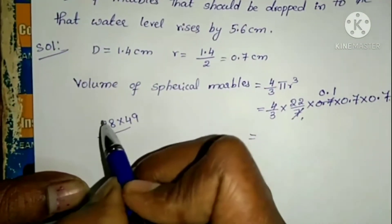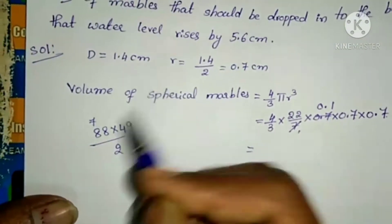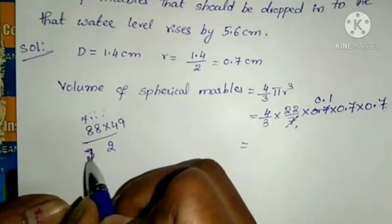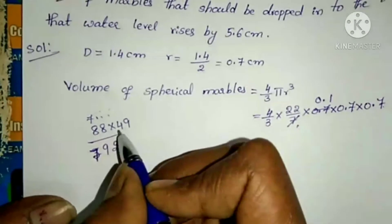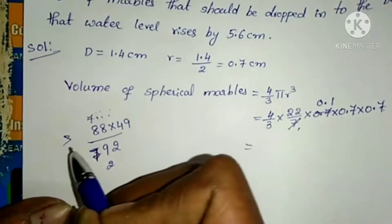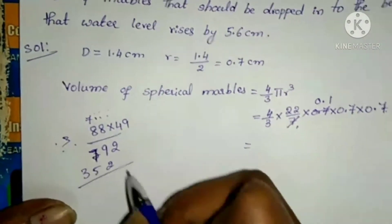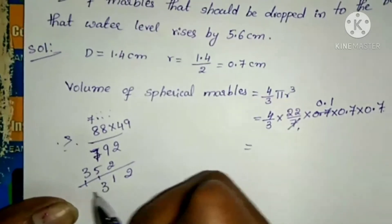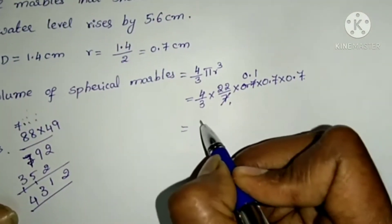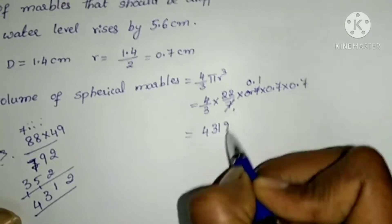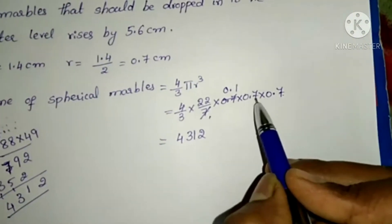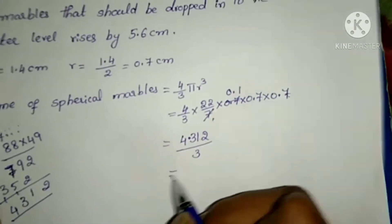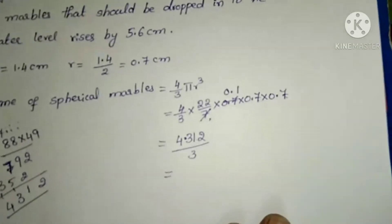Continuing the calculation for volume of a sphere: 88 divided by 3 × 0.49. After division by 3 and multiplying digits, the result comes to approximately 1.4312... Keeping 2 decimal places after the point gives the volume of one spherical marble ≈ 1.437 cm³.